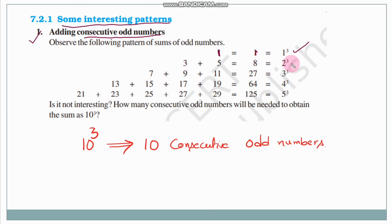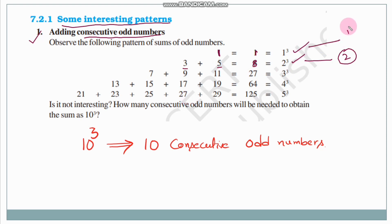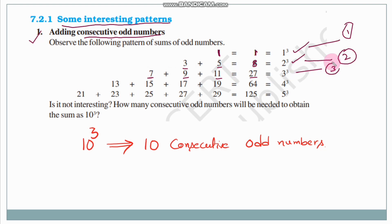For 2³ = 8: we write 8 as 3+5, using 2 consecutive odd numbers. For 3³ = 27: we write 27 as 7+9+11, using 3 consecutive odd numbers — adding 3 odd numbers gives us 3³. So when the cube is n³, we need n consecutive odd numbers.